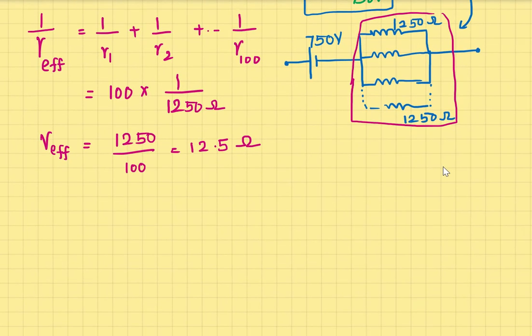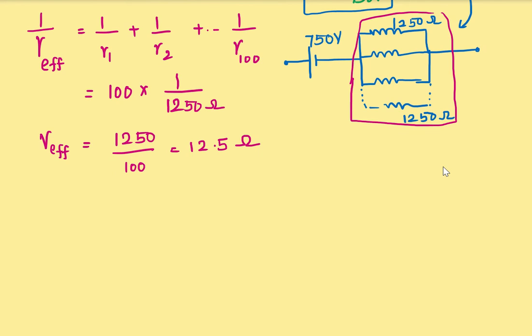Now let me draw another equivalent circuit. So we have 750V and we have the effective resistance of 12.5Ω.